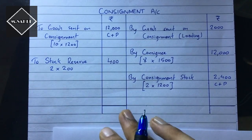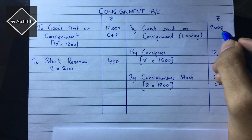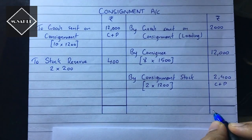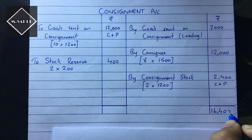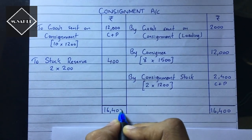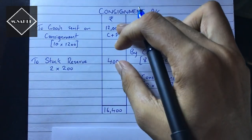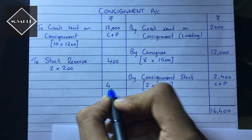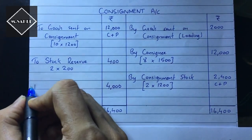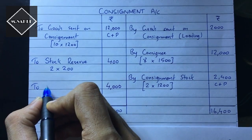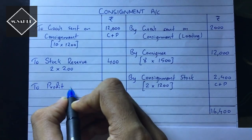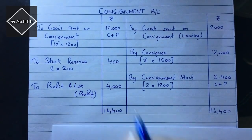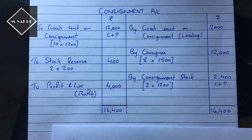Now we will balance the consignment account. The credit side is bigger: 12,000 plus 2,000 plus 2,400 is equal to 16,400. So 16,400 minus 12,000 minus 400 equals 4,000. This 4,000 will be the profit on consignment, transferred to profit and loss. This is the true and correct profit.